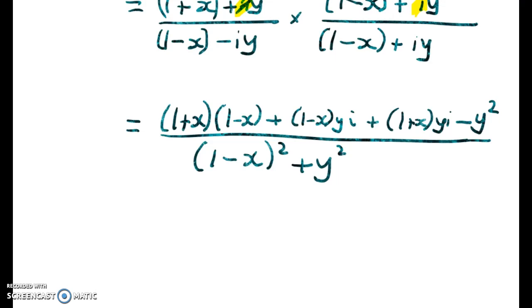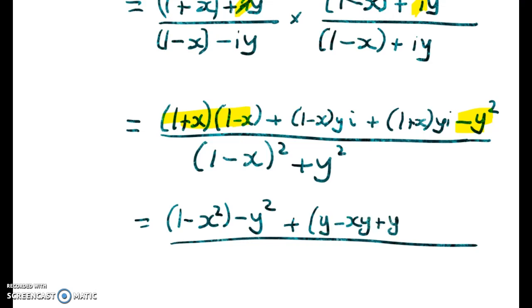All we have to do is to clean all of that up. So we're going to collect up real and imaginary stuff. So we get 1 - x² - y². That's my real part. Plus, let's see what we've got. Well, we've got y - xy + y + xy times i.